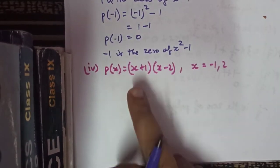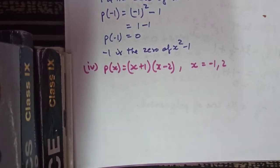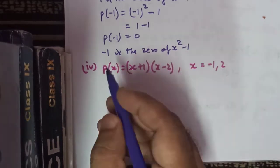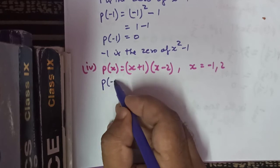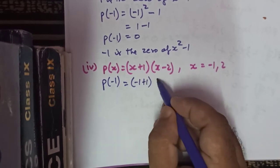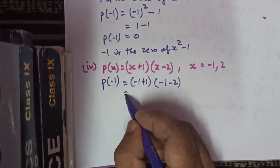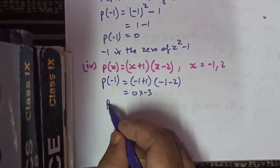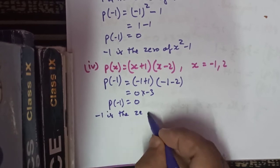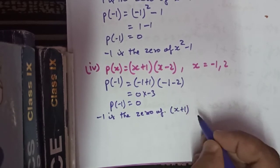In the next part we have the polynomial x plus 1 times x minus 2. We need to check whether minus 1 and 2 are the zeros. p(minus 1) is: minus 1 plus 1 times minus 1 minus 2, which equals 0 times minus 3 equals 0. So yes, p(minus 1) equals 0, which means minus 1 is the zero of polynomial x plus 1 times x minus 2.